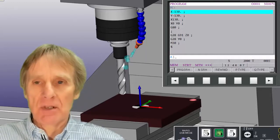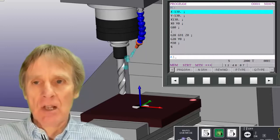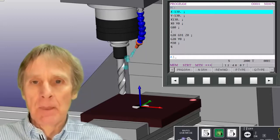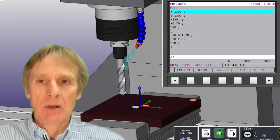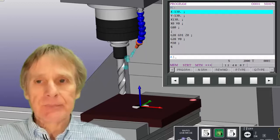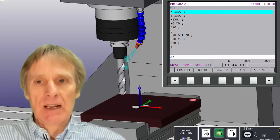So always try and imagine that the component is static and the tool is moving around the component. And that's how you know your X plus and your X minus.